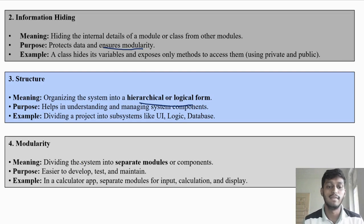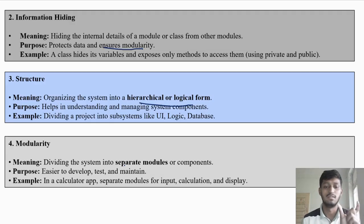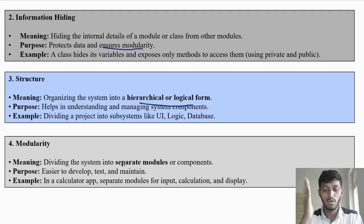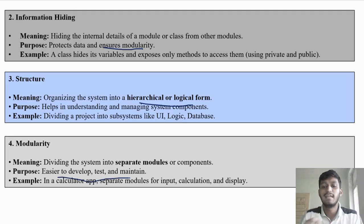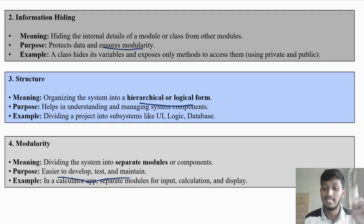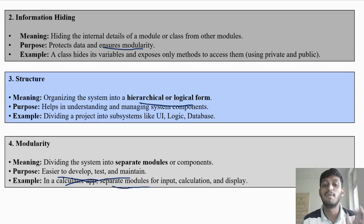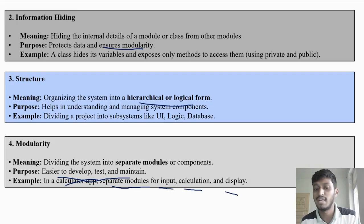Next is modularity. Modularity means dividing the system into separate modules or components. Whatever your system is, divide it into modules. You have a big project A — divide it into module B and module C. If module B is also large, divide it again into module E and module F. The purpose is it becomes easier to develop, test, and maintain. For example, if you have to develop a calculator app, create separate modules: one for input, one for calculation, one for display.